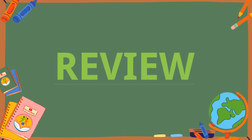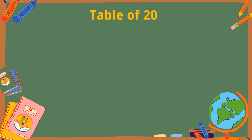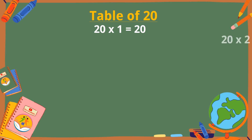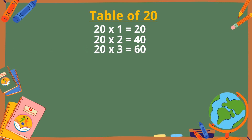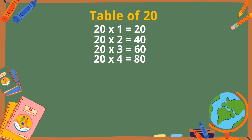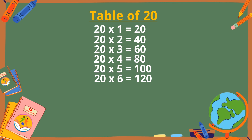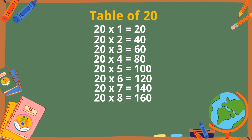Let's revise the table of 20. 20 ones are 20. 20 twos are 40. 20 threes are 60. 20 fours are 80. 20 fives are 100. 20 sixes are 120. 20 sevens are 140. 20 eights are 160. 20 nines are 180.